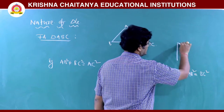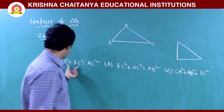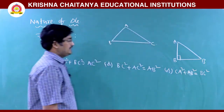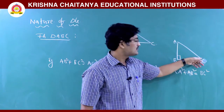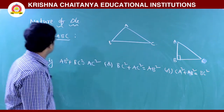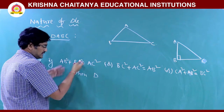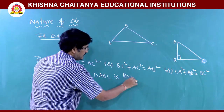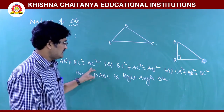If the triangle follows the condition AB² + BC² = AC², then the right angle is at vertex B, since B is common to both sides AB and BC. So if that condition holds, the triangle has a right angle at B. Similarly, if BC² + AC² = AB², the right angle is at C.